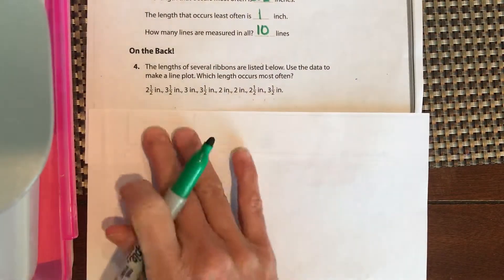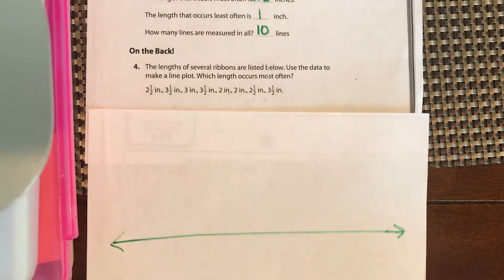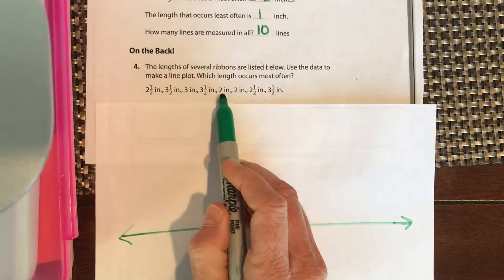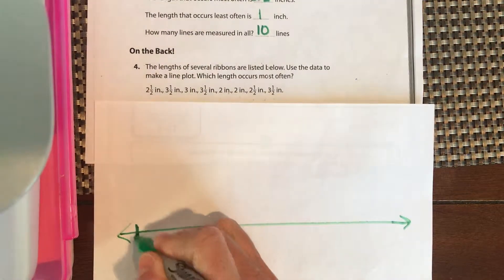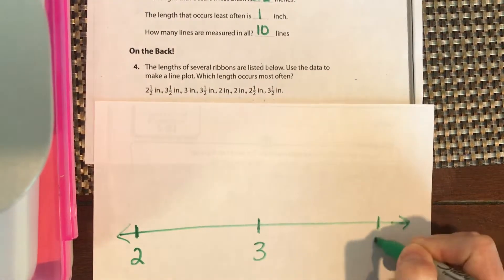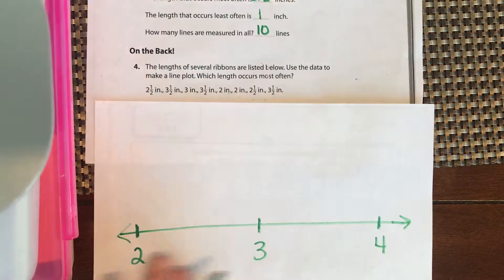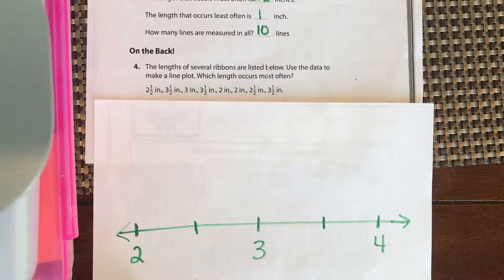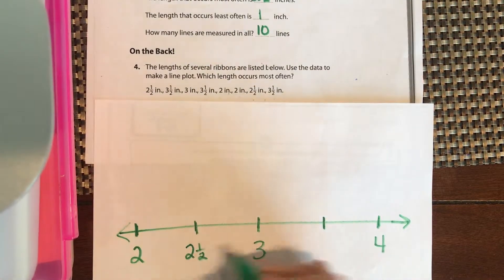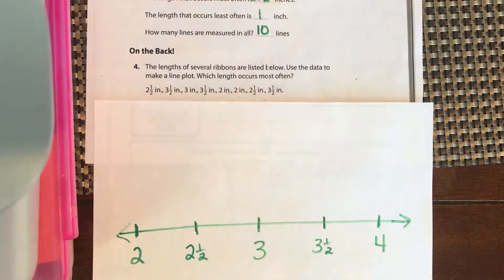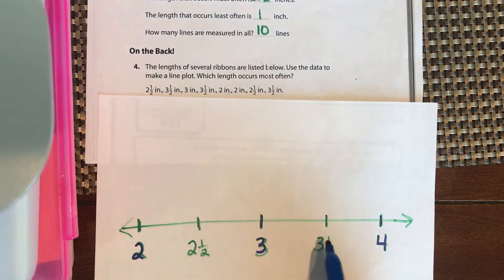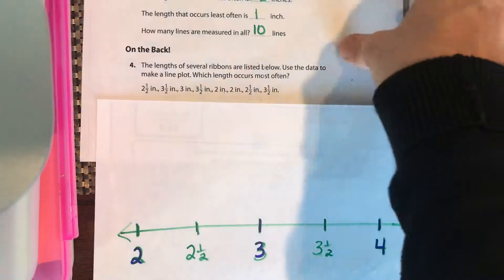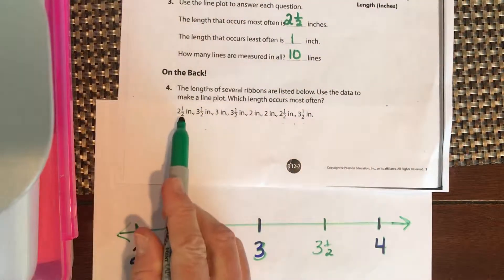Leave more space than yesterday so you have room for the dots. Instead of starting at zero, mark two, three, and four. Since all measurements are to the half inch, divide each whole-inch section in half with one line. Then label the numbers: two, two and a half, three, three and a half, and four.